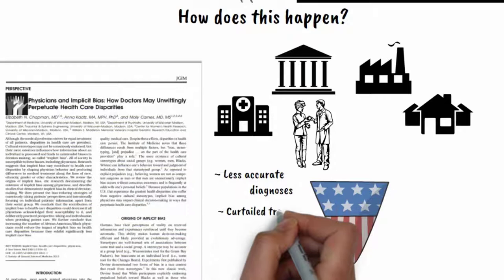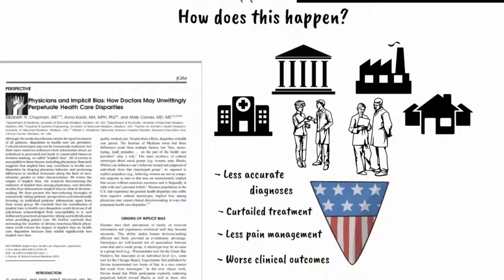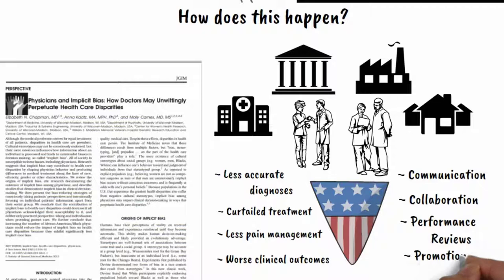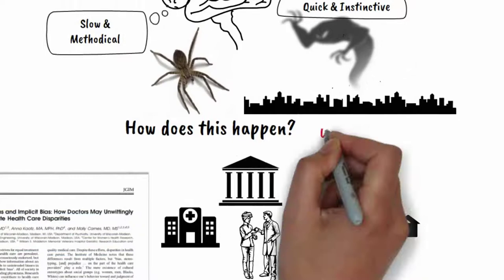Moreover, the same implicit bias affects communication, collaboration, performance reviews, as well as promotion. Implicit bias can show up in areas that you wouldn't expect. As it is undetected, it can undermine the success of institutions as well as being injurious to individuals.